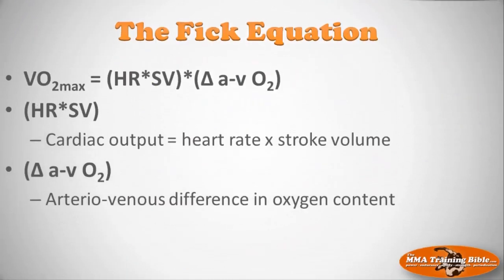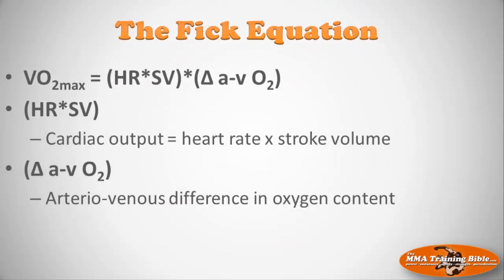There's something called the Fick equation that defines VO2 max — it's essentially the equation for VO2 max, named after the scientist Fick who developed it. VO2 max equals, in one set of parentheses, heart rate times stroke volume, and then all of that is multiplied by what's called the AVO2 difference — the arteriovenous difference in oxygen content. The delta symbol represents the change, A is arterio, V is venous, and O2 is oxygen.